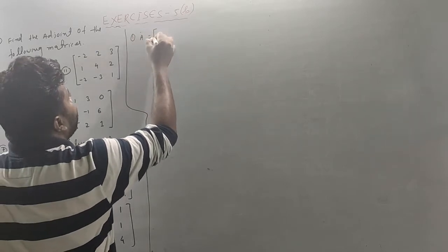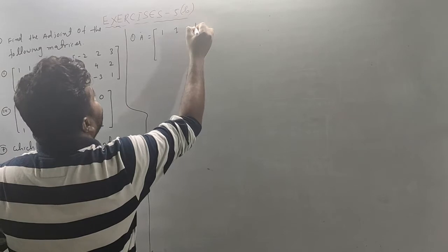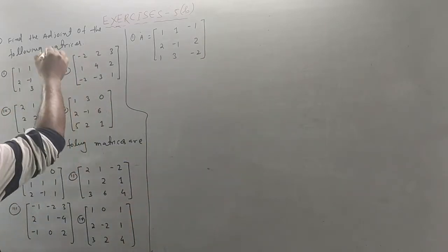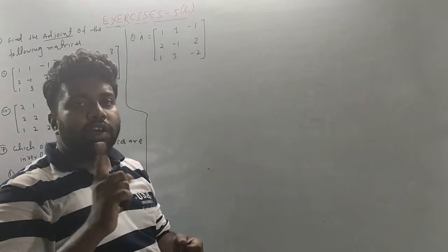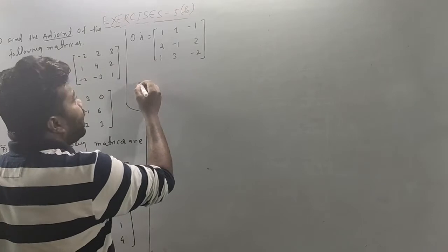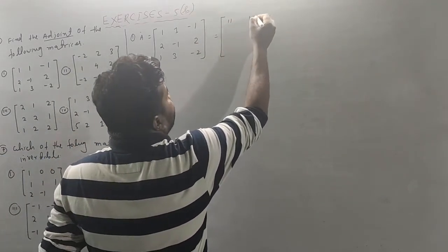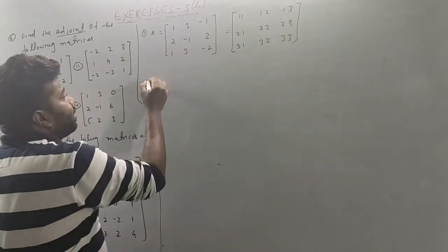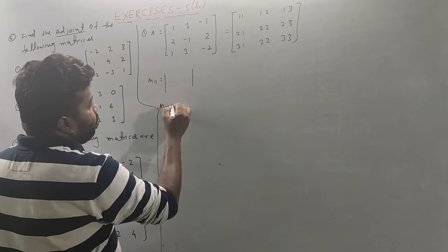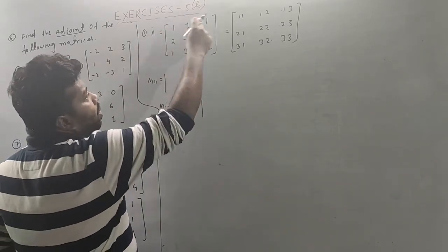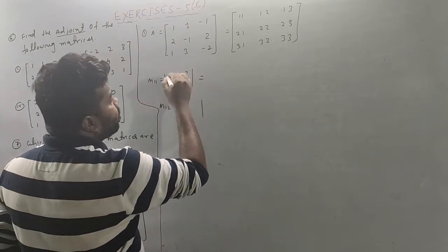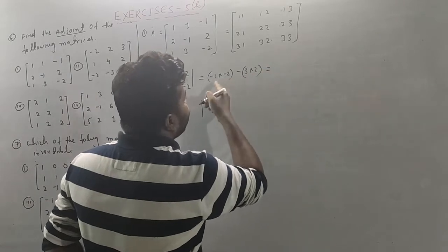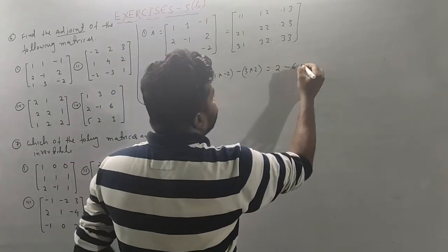The first question is: let A equal to the matrix with elements a(1,1), a(1,2), a(1,3), a(2,1), a(2,2), a(2,3), a(3,1), a(3,2), a(3,3). The second question is: let A equal to a(1,1), a(1,2), a(1,3), a(2,1), a(2,2), a(2,3), a(3,1), a(3,2), a(3,3). We compute the determinant: minus 1 times (2×2 - 6) gives minus 4.